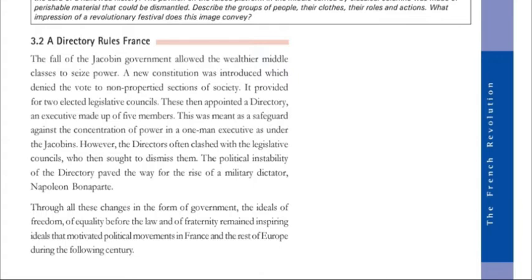These then appointed a Directory — the executive made up of five members. This was meant to avoid the concentration of power in a one-man executive as had been the case under the Jacobins.